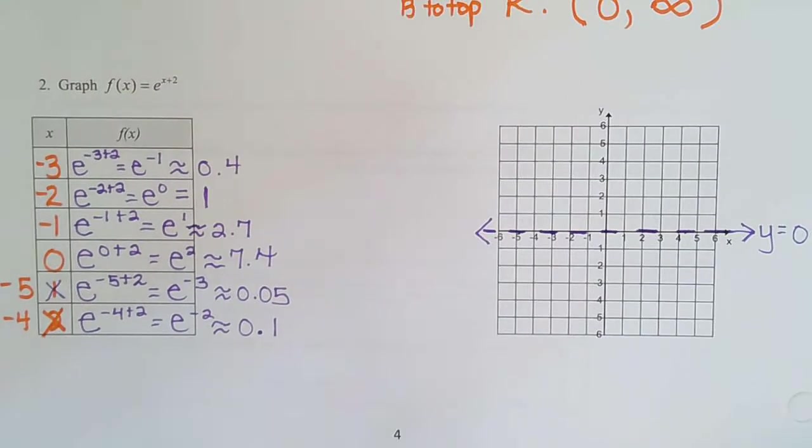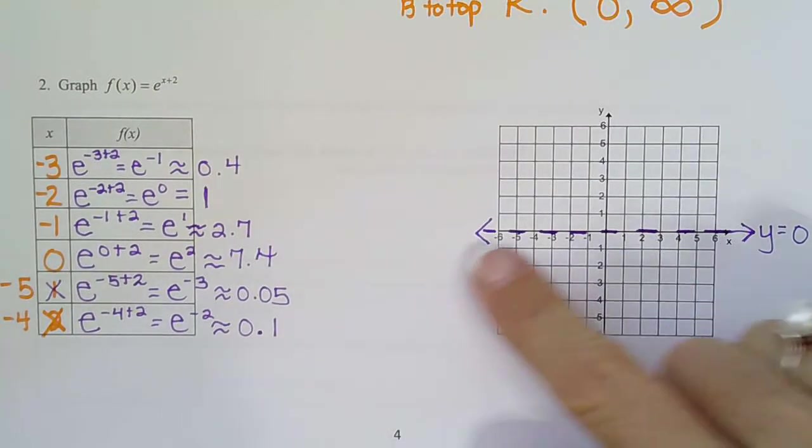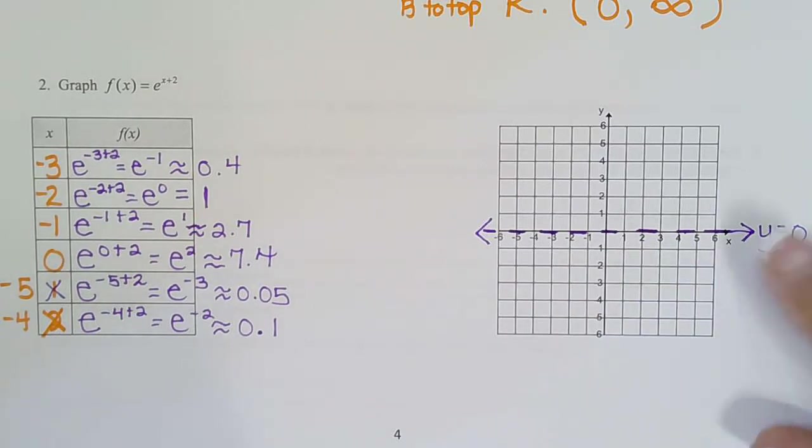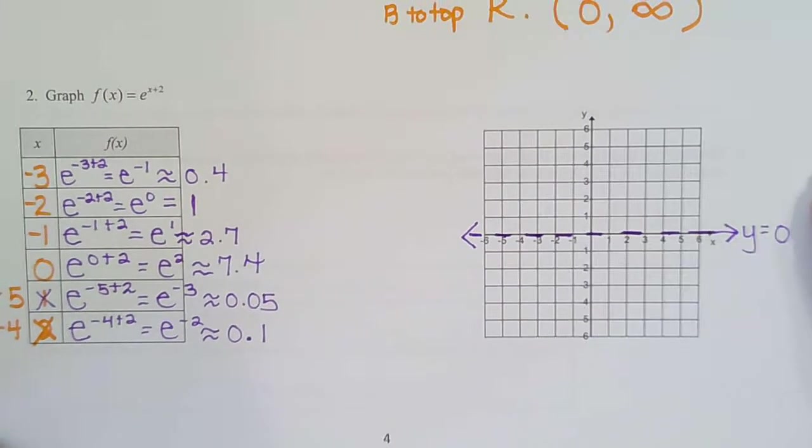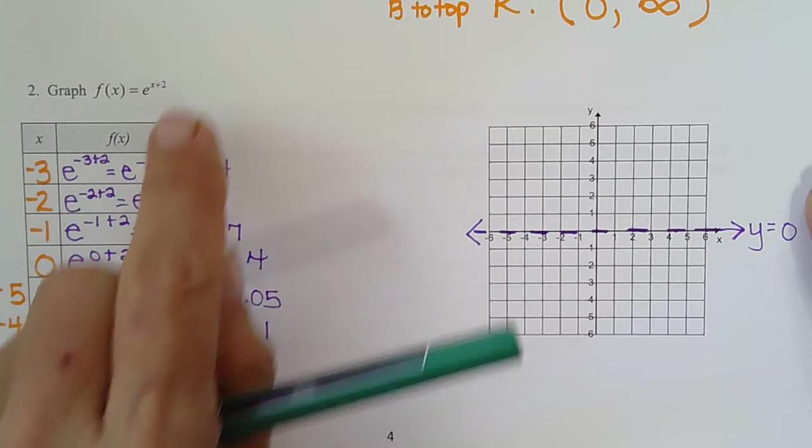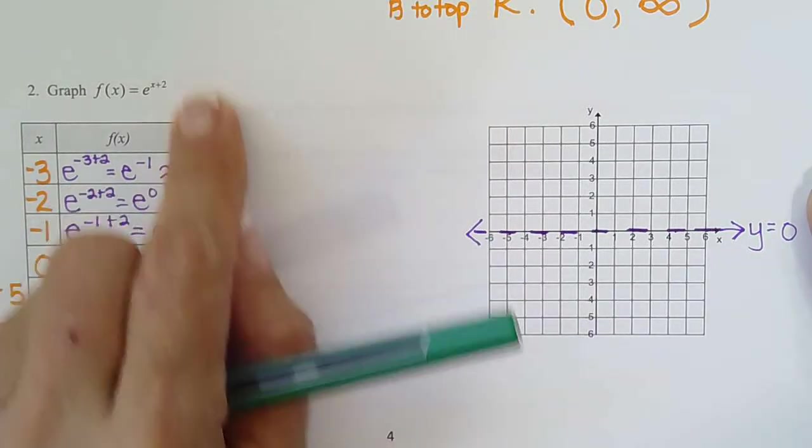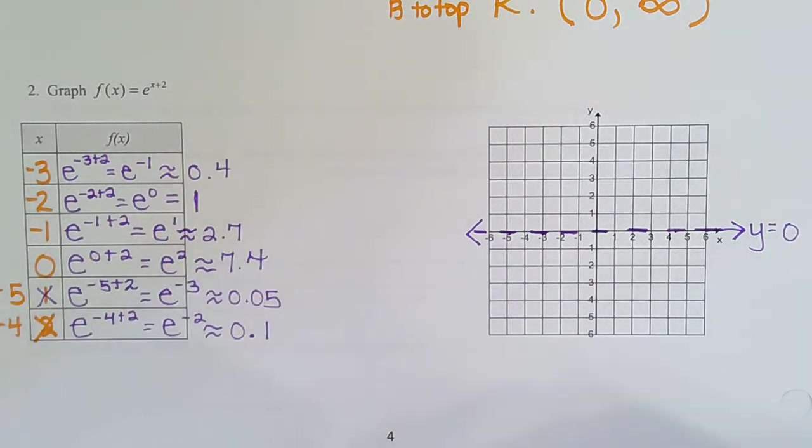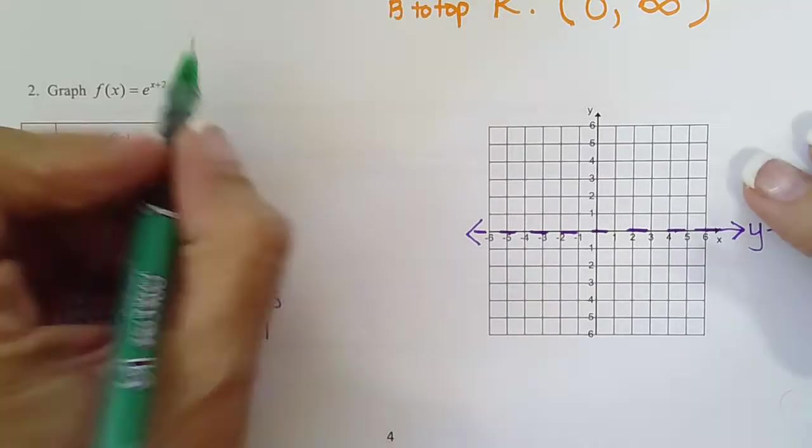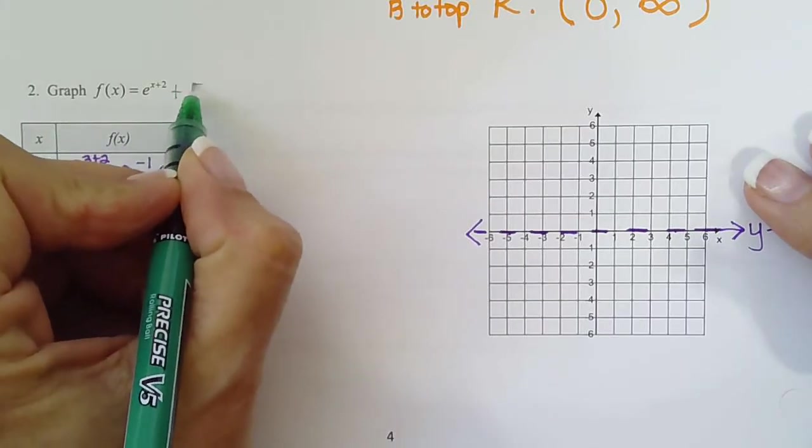We are ready to graph. I plugged in or sketched my asymptote. Remember the horizontal asymptote will always be the same unless the graph's been shifted up or down. A shifting up or down would occur if you had plus 5 out here.